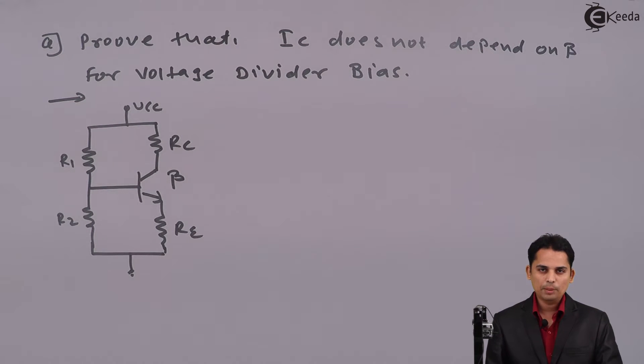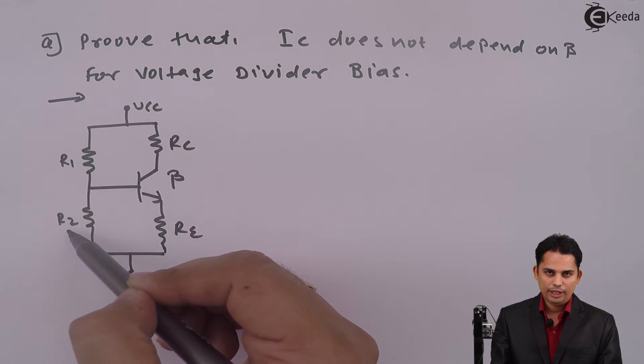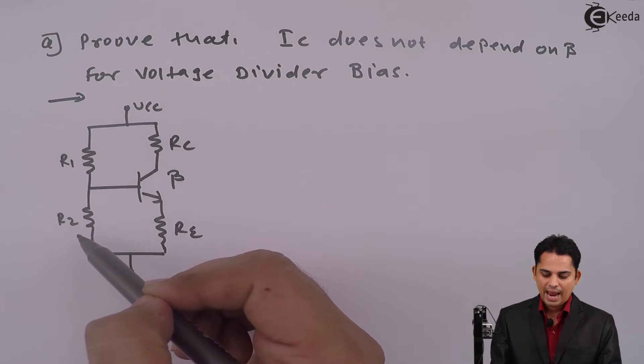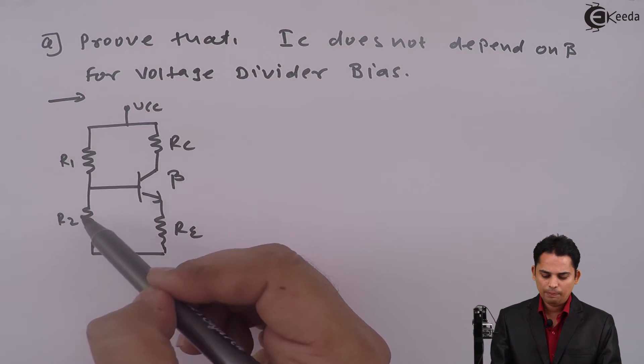Now in step one, we will apply Thevenin's theorem to get a simplified circuit diagram of voltage divider bias. In that particular case, at input side, we will apply Thevenin's to get Vth and Rth, where Vth is nothing but Vcc multiplied by R2 divided by R1 plus R2, and Rth is nothing but R1 parallel R2.